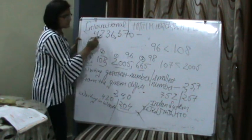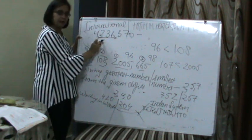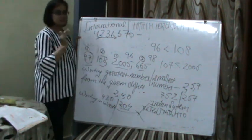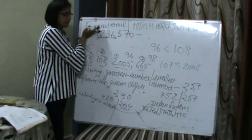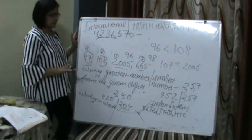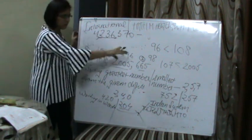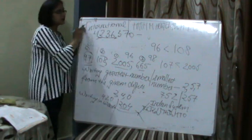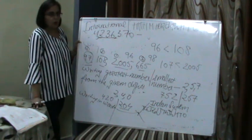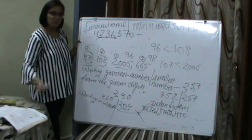One more comparison: when we arrange according to International system, we put commas after every three digits. When we arrange according to Indian system, we put commas after every two digits. So this was International system and this is Indian system. In this exercise, we studied comparing numbers, writing greatest and smallest numbers from given digits, and Indian and international systems. Tomorrow I will start the exercise. Thank you, bye.